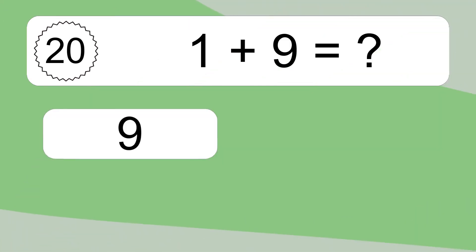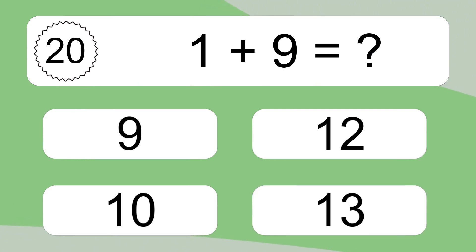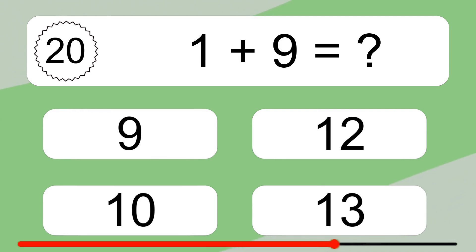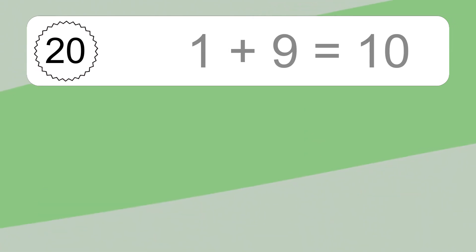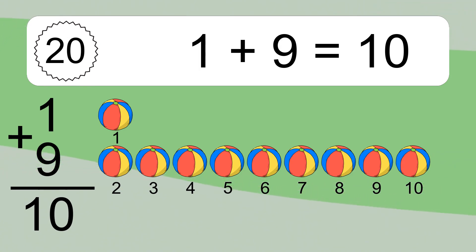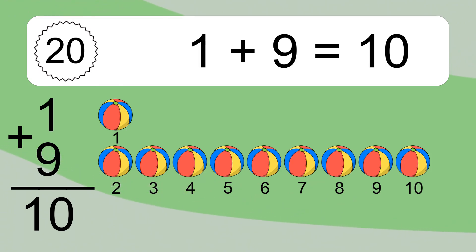1 plus 9 equals what? 1 plus 9 equals 10. Let's count it. 1, 2, 3, 4, 5, 6, 7, 8, 9, 10.